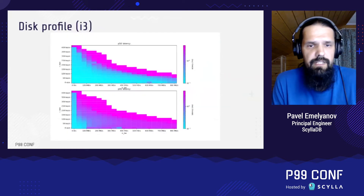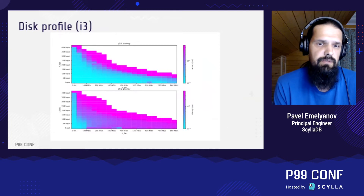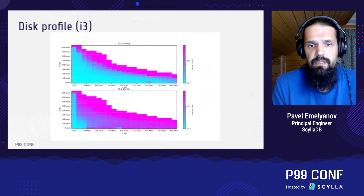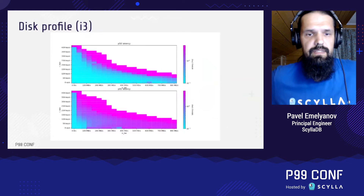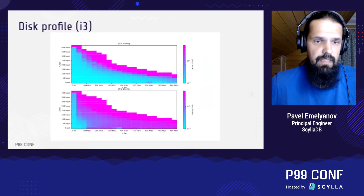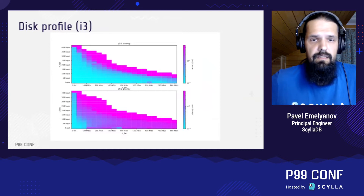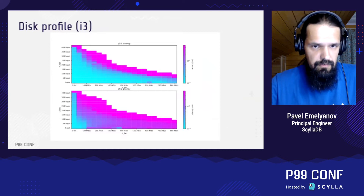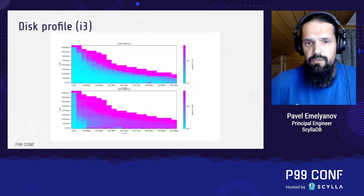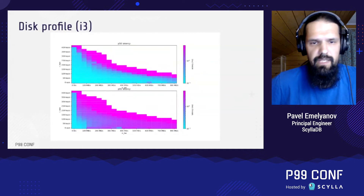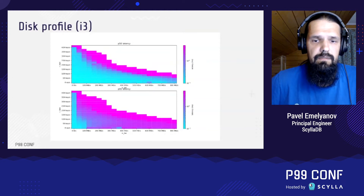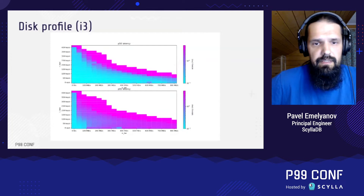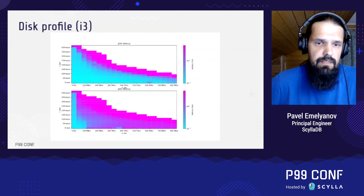This observation made us perform a profound measurement of disks. What we did was take the Linux disk tester application called FIO and make it load the disk with different rate-limited mixed workloads. In fact, we loaded the disk with all kinds of mixed workloads. The test was run for all combinations of read rates and write rates in the bounds between zero and the maximum possible pure rate. We were interested in the read request latency, and this is what we got.